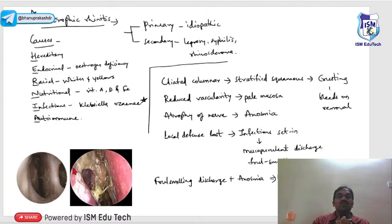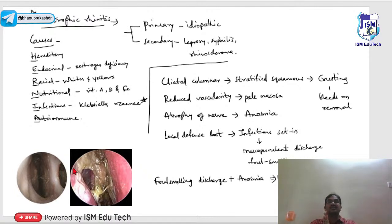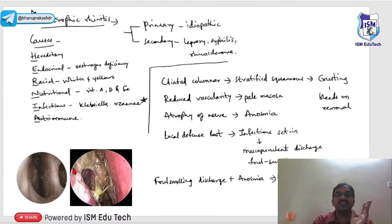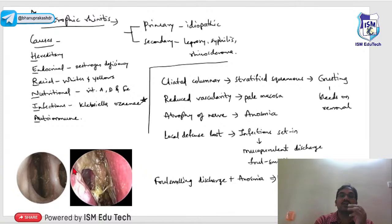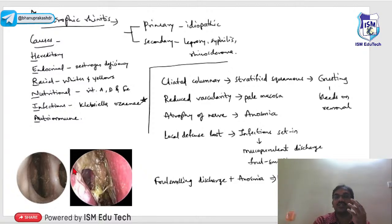In atrophic rhinitis, loss of local mucosal immune factors allows infections to set in, causing mucopurulent discharge and foul smell. The secondary causes include leprosy and syphilis, which cause bony damage and perforations. The pathogenesis sequence: ciliated columnar epithelium → stratified squamous → no ciliary clearance → crust formation → reduced vascularity → pale mucosa → nerve atrophy → anosmia → merciful anosmia.